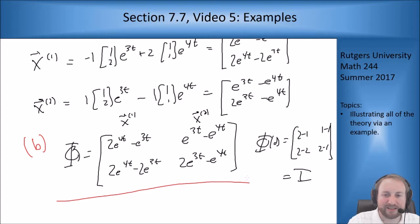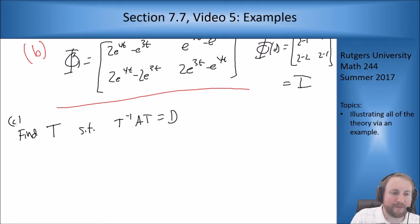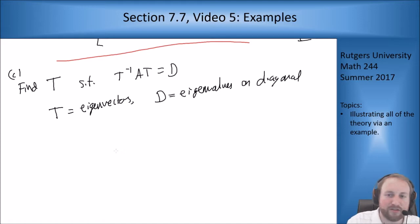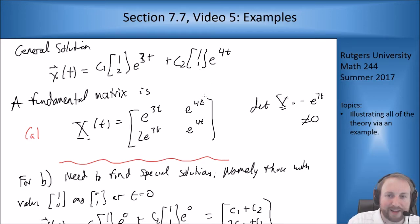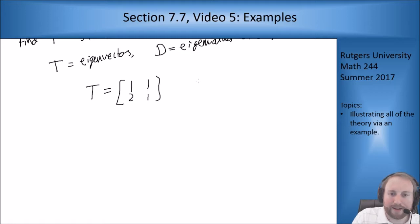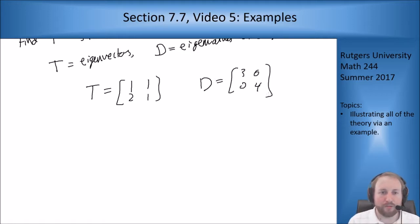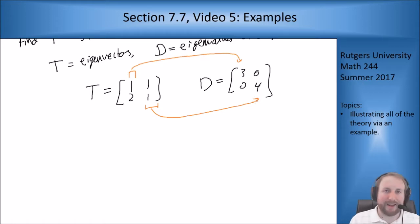For part C, I want to find a matrix T to diagonalize A. We know T should be formed from the eigenvectors and D has eigenvalues on the diagonal. My eigenvectors are [1,2] with eigenvalue 3 and [1,1] with eigenvalue 4. So T = [[1,1],[2,1]] and D = [[3,0],[0,4]]. We always know this works — no need to prove it diagonalizes A again.